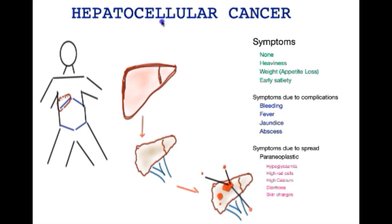This is the second in a series of videos on hepatocellular cancer, or liver cancer. In the cartoon you can see that the liver resides on the right side just below the rib cage. It has important functions in digestion, production of important proteins, and excretion.